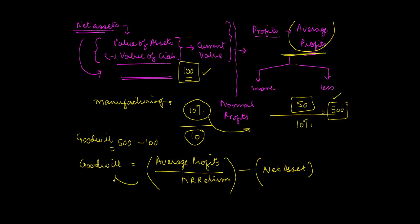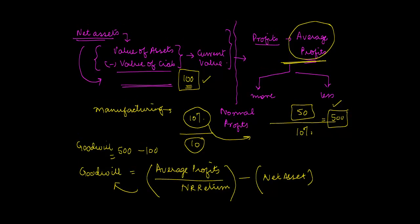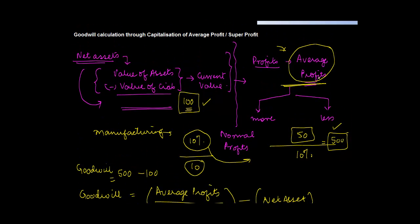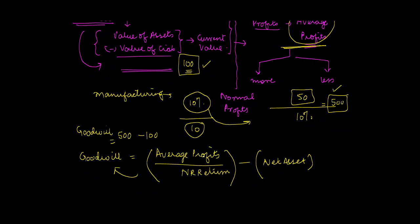The only difference in the super profit method is that instead of taking the average profits, you consider super profits. You capitalize the super profits in the same manner: super profits divided by the normal rate of return times 100. This gives you the value of goodwill.